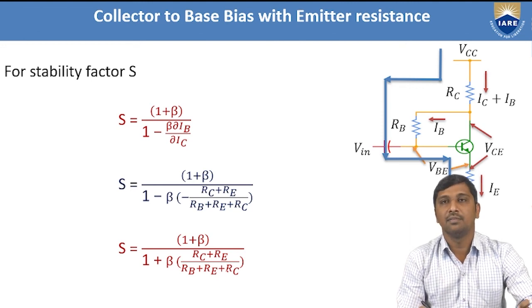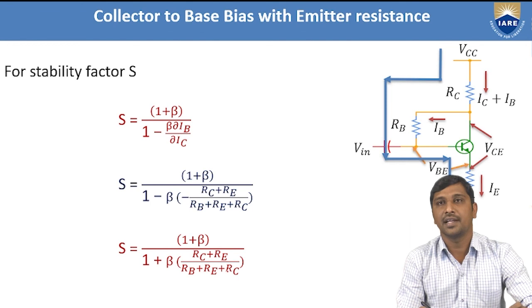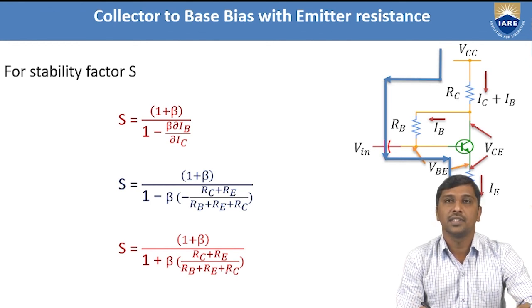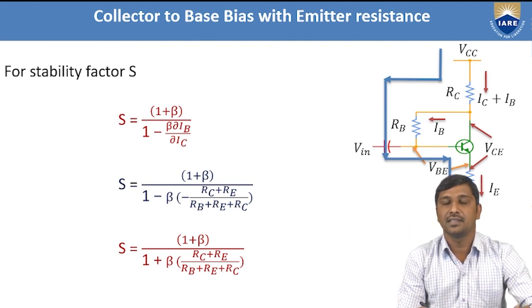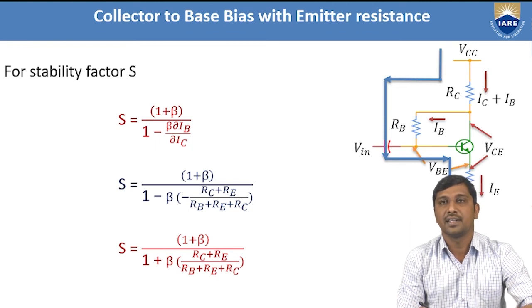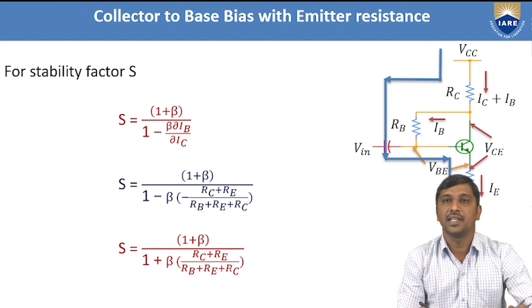Comparing this stability factor with fixed bias and with collector-to-base bias alone, the collector-to-base bias with emitter resistance improves the stability factor further. Today we observed the collector-to-base bias and collector-to-base bias with emitter resistance operation to provide faithful amplification using the transistor. Thank you.